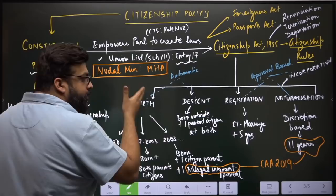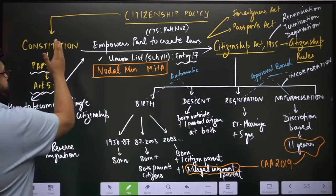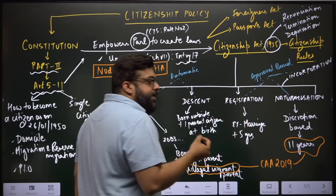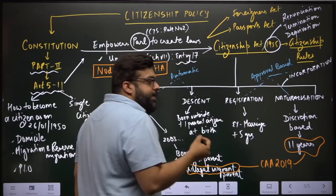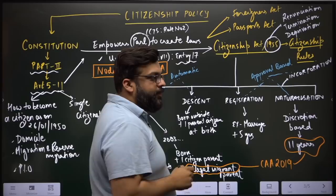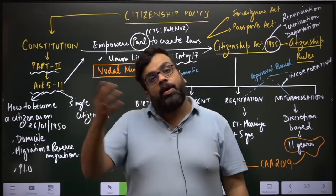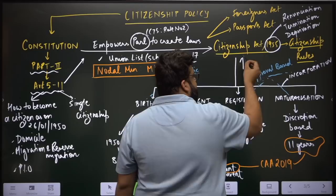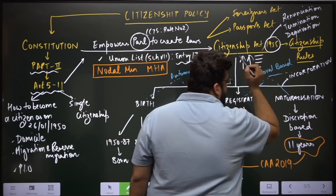The states of India have no role to play in determining citizenship provisions — they have absolutely no authority whatsoever. This is an application of the principle that the Centre is stronger than the states. Citizenship therefore becomes an exclusive domain of Parliament. The Constitution allows for the creation of certain laws, and Parliament exercised this power in 1955 by creating the principal law on citizenship: the Citizenship Act of 1955.